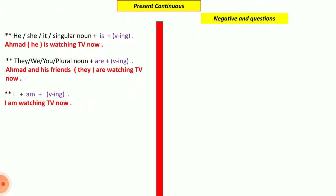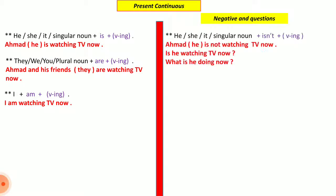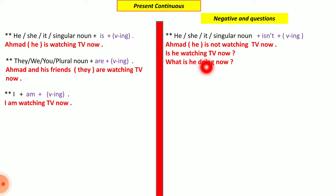For negatives and questions in present continuous, it is easier than simple present — we don't add any extra auxiliary word. For questions, we swap the subject and helping verb (is/am/are). For negatives, we add 'not' after the helping verb. For example: 'Ahmed is not watching TV now' — we just add 'not.' For yes/no questions: 'Is he watching TV now?' The verb stays in the 'ing' form throughout.